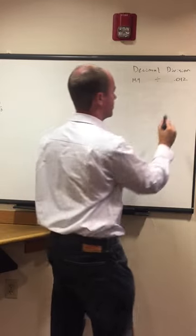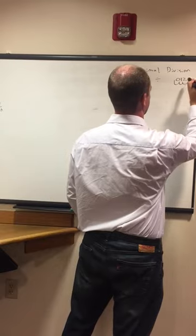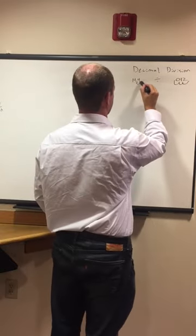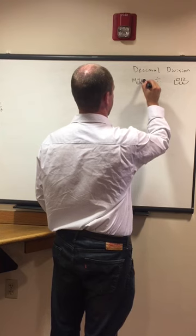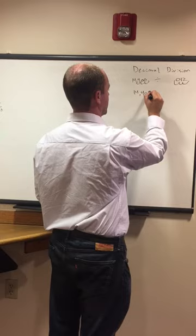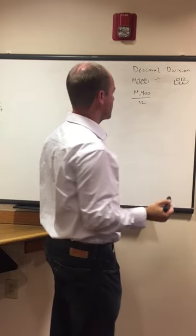So 0.012, we need to move it over one, two, three decimal points. And then with 14.4, also three, so we'll go one, two, three, which means we're going to add two zeros. And now we will have 14,400 divided by 12, much more manageable.